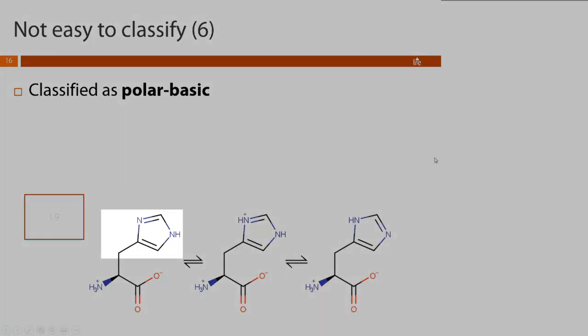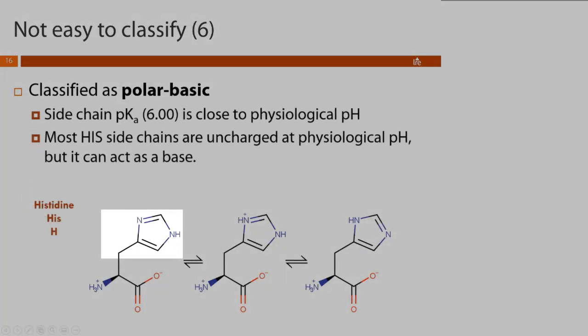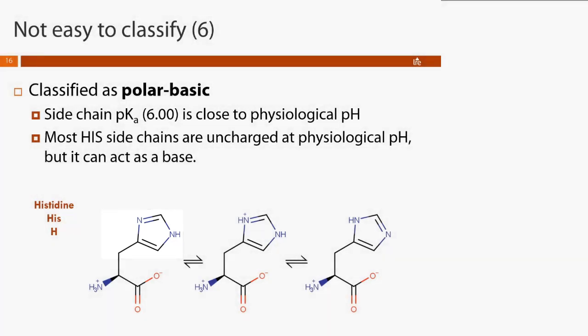Histidine is traditionally classified as polar basic; three-letter code HIS, one-letter H. Even though it has a side chain that can act as a base, since the side chain pKa is 6.0, most histidines are going to be uncharged at physiological pH.